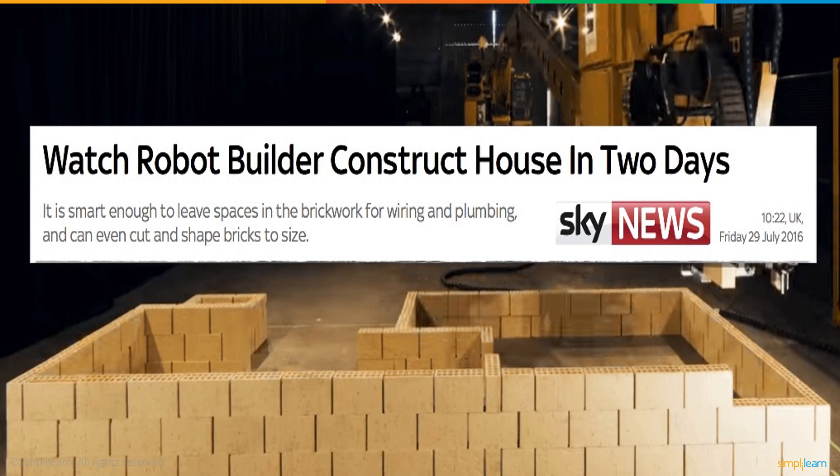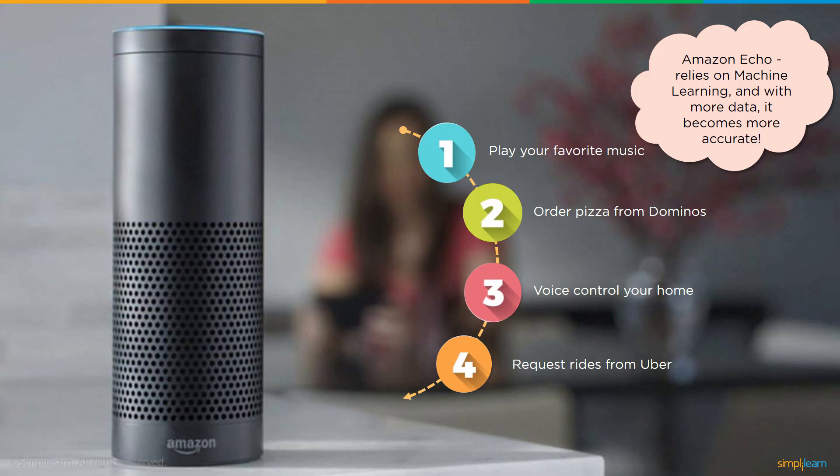Amazon Echo relies on machine learning, and with more data it becomes more accurate. Play your favorite music, order pizza from Domino's, voice control your home, request rides from Uber.